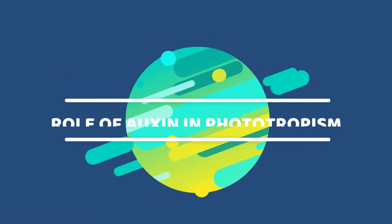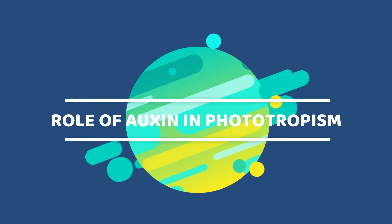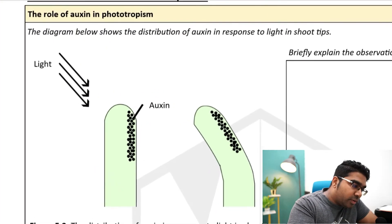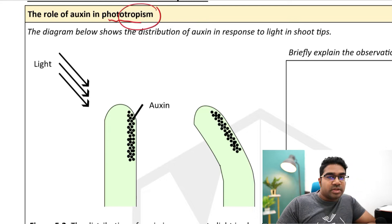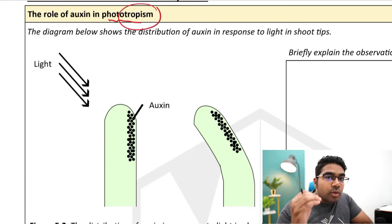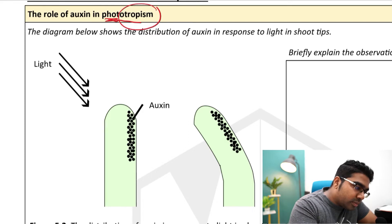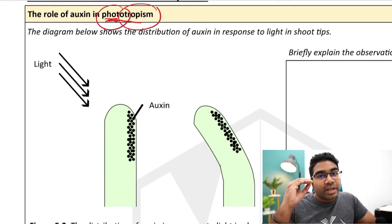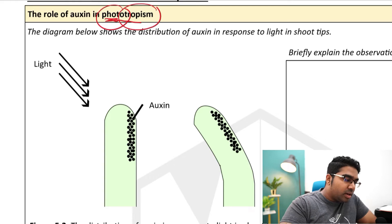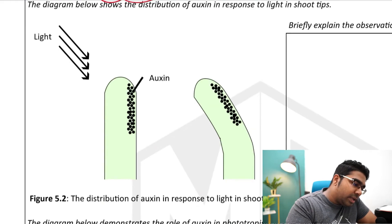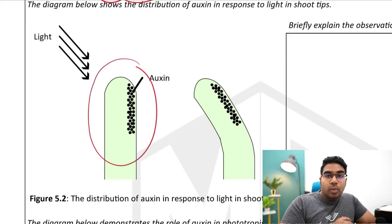In this video we'll be looking at the effect of auxin on phototropism. First, let's look at phototropism. Phototropism is a type of tropism — tropism is a growth response in plants. Phototropism is the response to the light stimulus, and so when light hits the shoot tip, certain things happen.